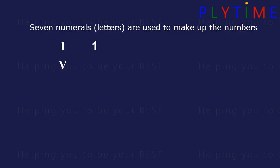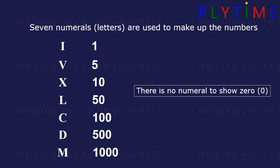I is 1, V is 5, X is 10, L is 50, C is 100, D is 500, and M is 1000. There's no numeral to show zero.